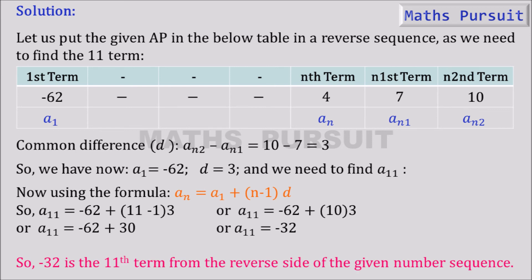So -32 is the 11th term from the reverse side of the given number sequence. Hope guys, you understood this calculation. We just reverse the AP so that it makes our life easy while doing the calculation. So you could easily see how easily we find out the 11th term once we reverse the AP and moved ahead with our calculation.